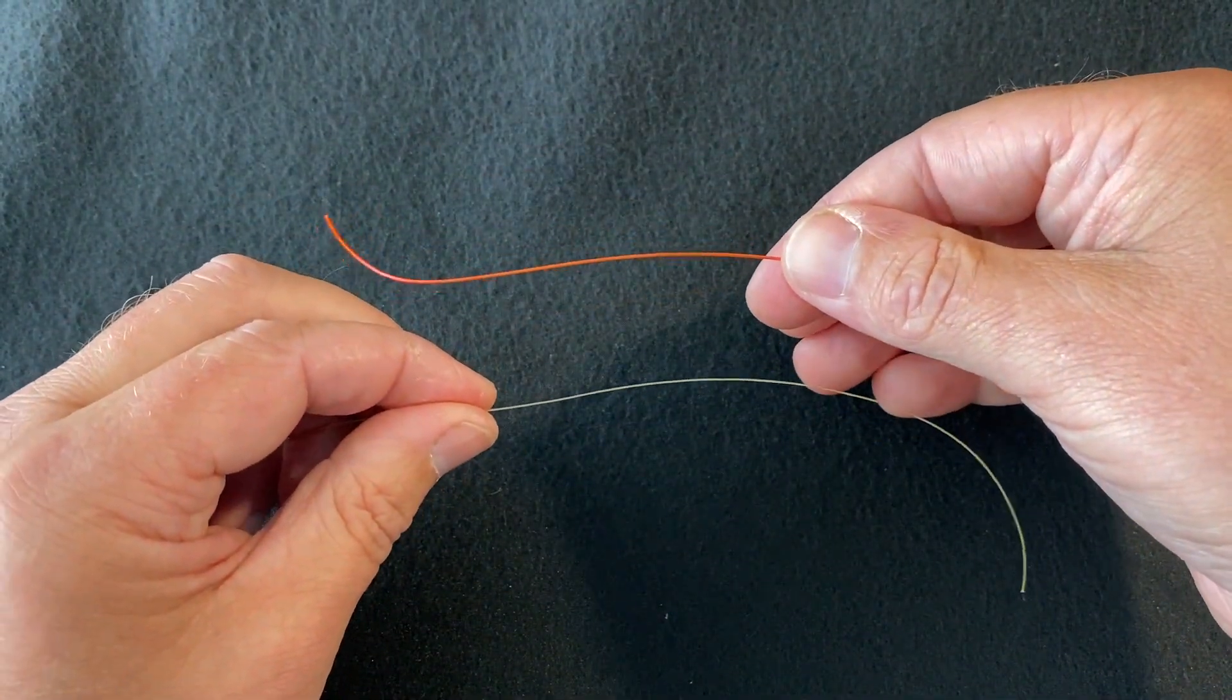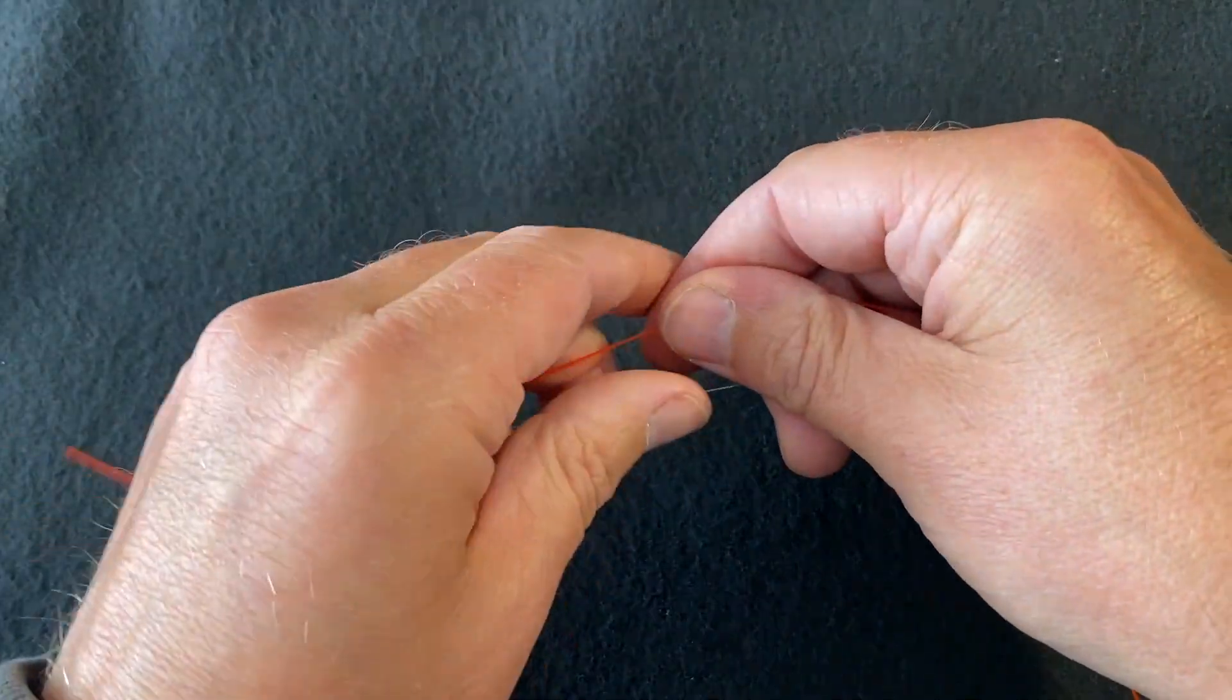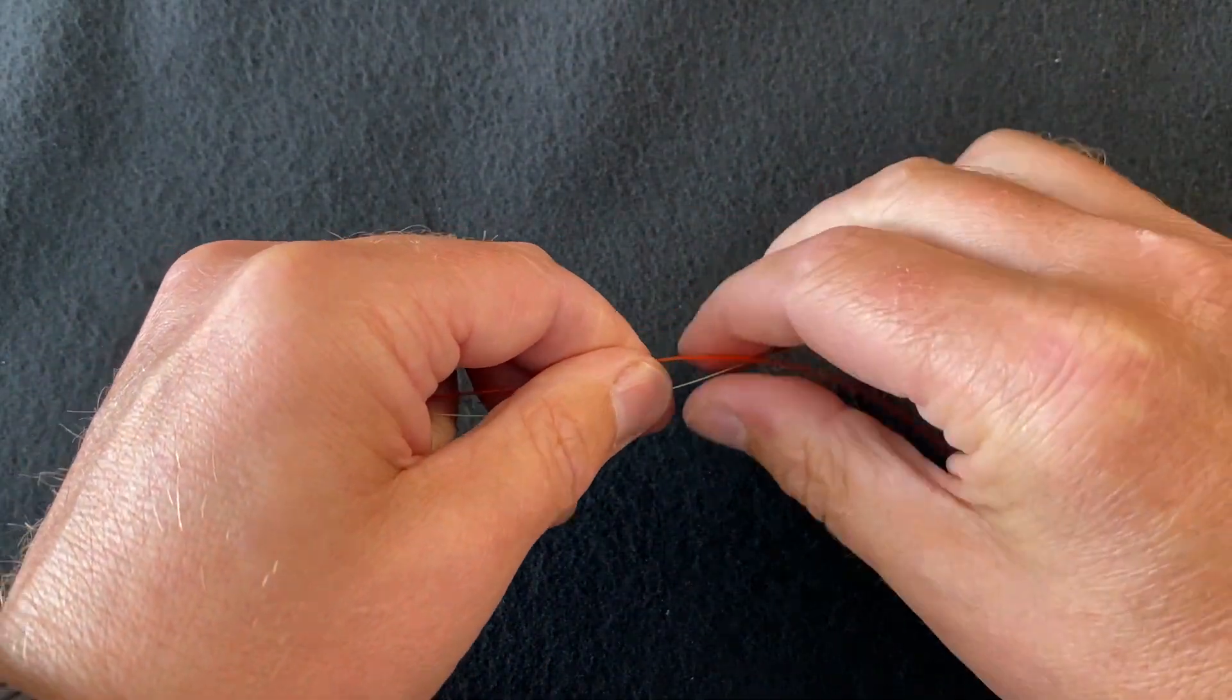Firstly, take your two pieces of line and lay them together parallel, giving yourself enough room to form the knot.